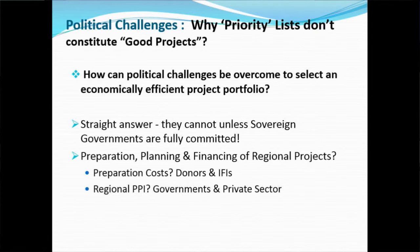What we found was that expediency of the heads of state meant short-term decisions on projects they wanted were put on those lists, rather than projects that would support proper planning and good decisions around what Africa actually needs.